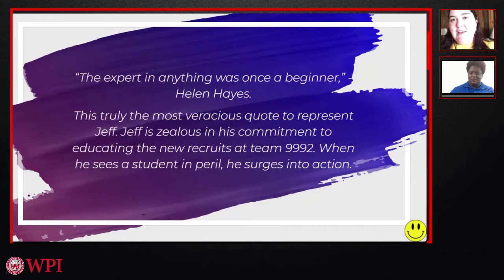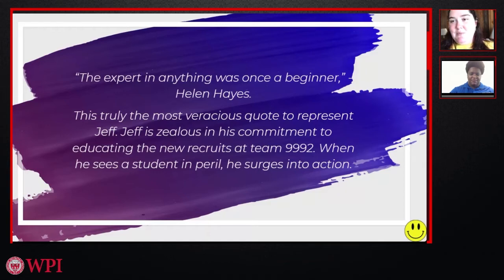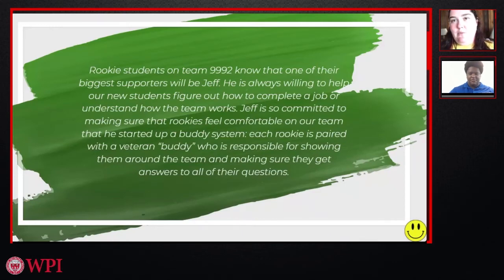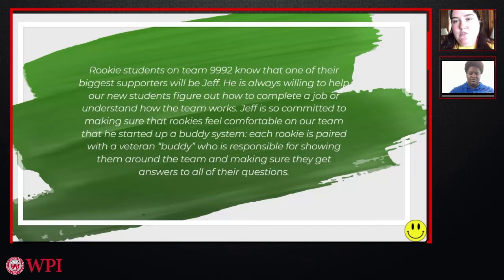Here's a bad example: 'The expert in anything was once a beginner — Helen Hayes. This is truly the most apt quote to represent Jeff. Jeff is zealous in his commitment to educating the new recruits at Team 9992. When he sees a student in peril, he springs into action.' That's a lot of words and a quote, but it doesn't tell us much about Jeff. Using cleaner language gives much more information: 'Rookie students on Team 9992 know that one of their biggest supporters will be Jeff. He's always willing to help new students figure out how to complete a job or understand how the team works. Jeff is so committed to making sure rookies feel comfortable that he started a buddy system — each rookie is paired with a veteran buddy responsible for showing them around and making sure they get answers to all their questions.' No fancy language, but much more impactful information.